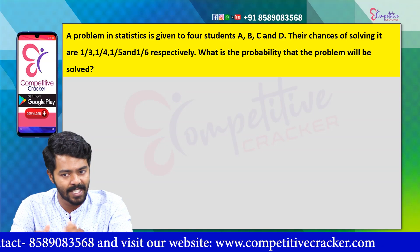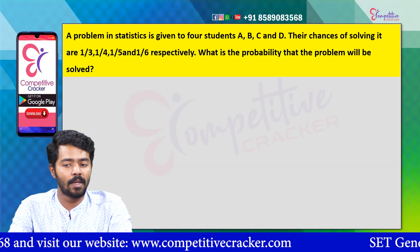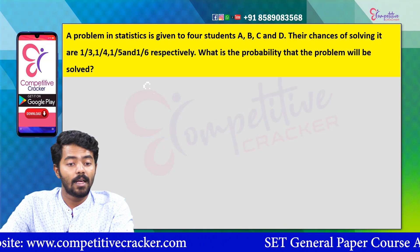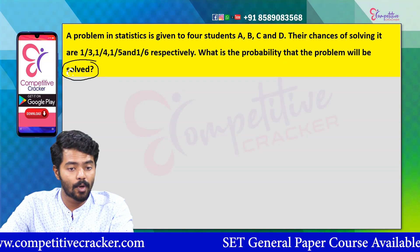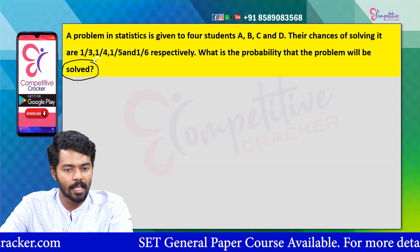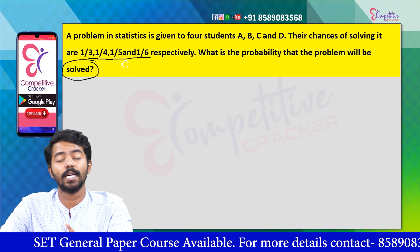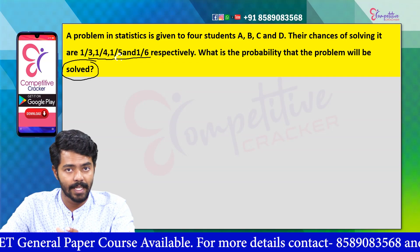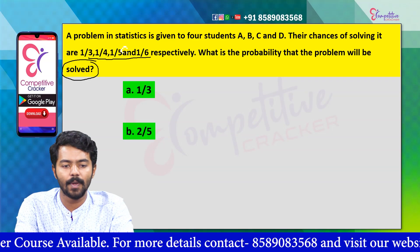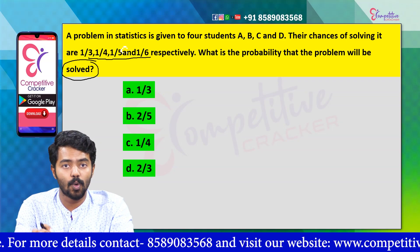You can solve that problem. What is the probability that the problem will be solved? This is a total probability. If you have 4 students, you can solve that problem. If you want to see that they are — option A: 1 by 3, option B: 2 by 5, option C: 1 by 4, option D: 2 by 3.